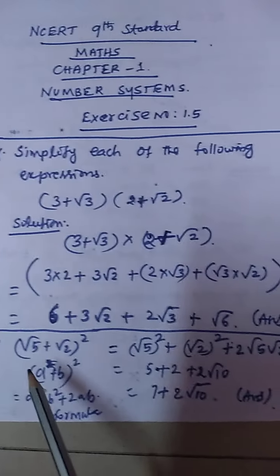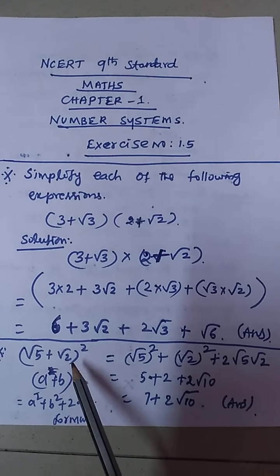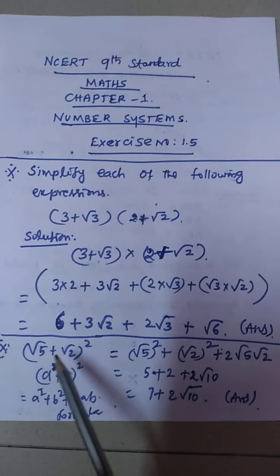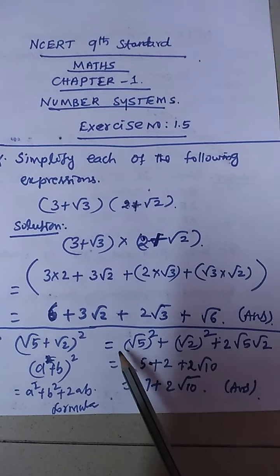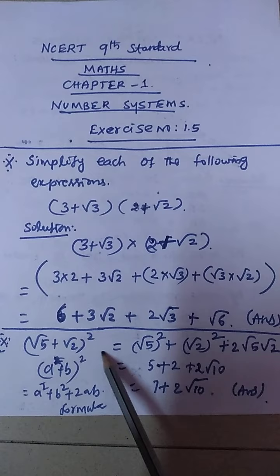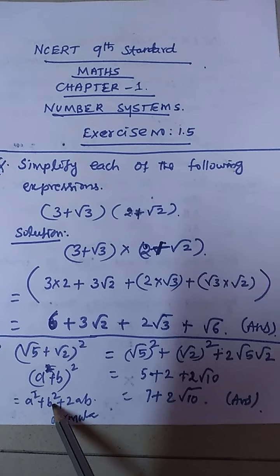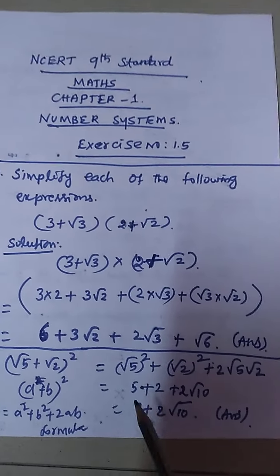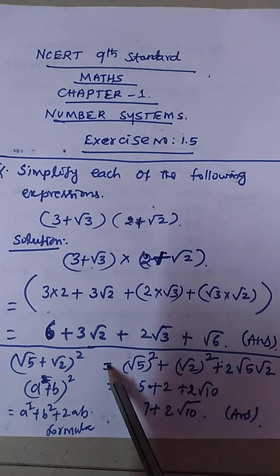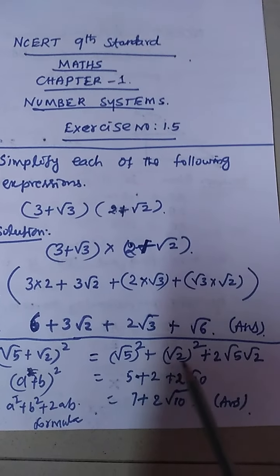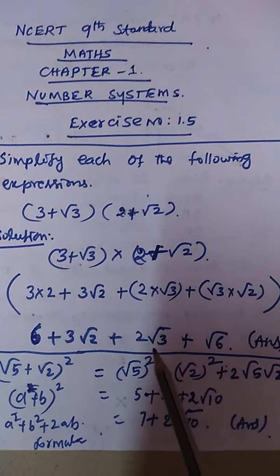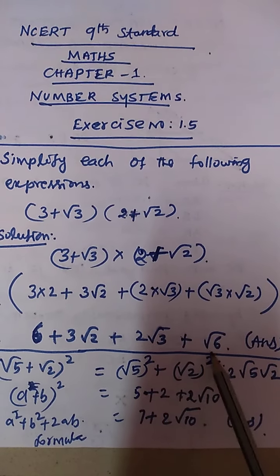Next question: (√5 + √2) whole squared. We use the formula (A + B)² = A² + B² + 2AB. Here A is √5 and B is √2. So (√5 + √2)² = (√5)² + (√2)² + 2 × √5 × √2. Root 5 squared is 5, root 2 squared is 2.